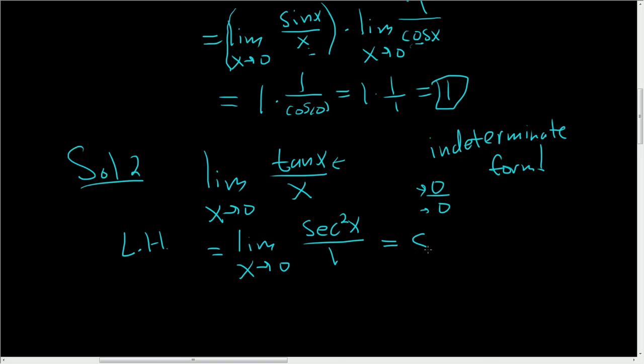At this point, you can plug in zero. You get secant squared of zero, which is 1. So two ways to do the same problem.